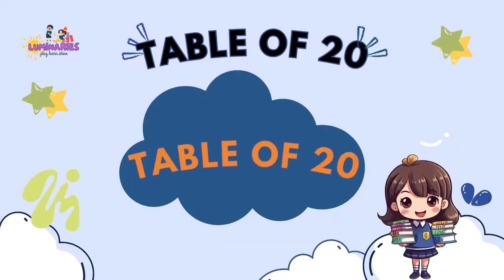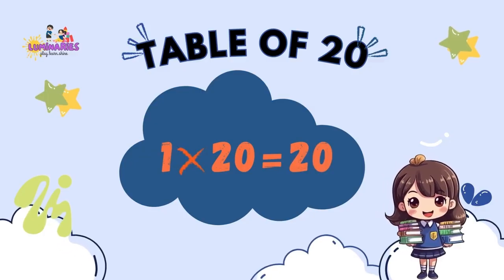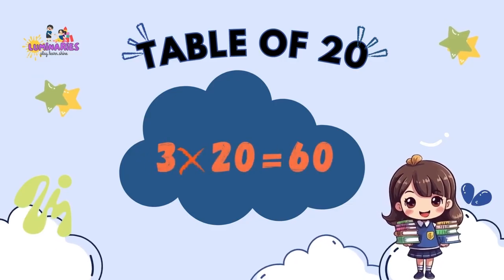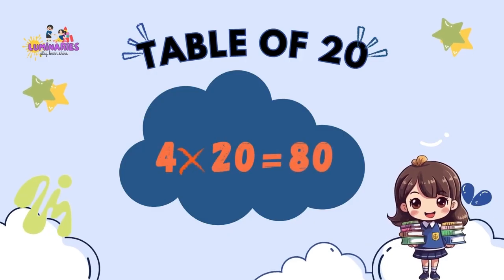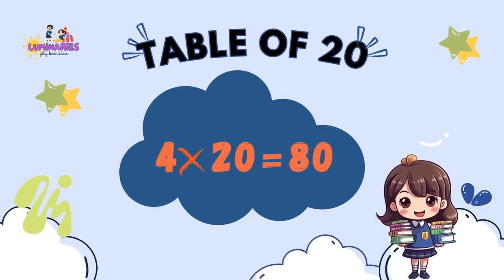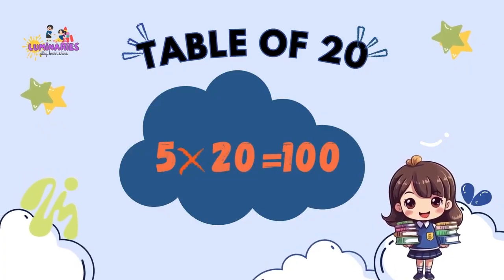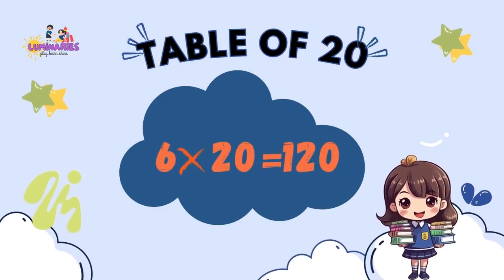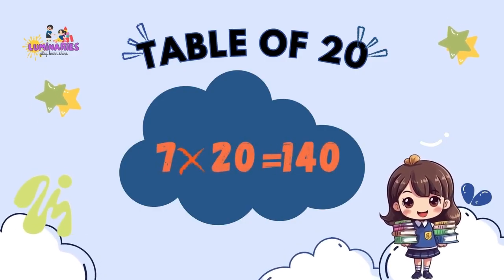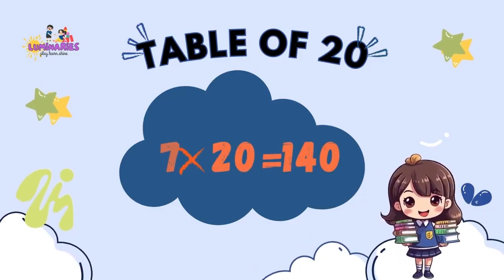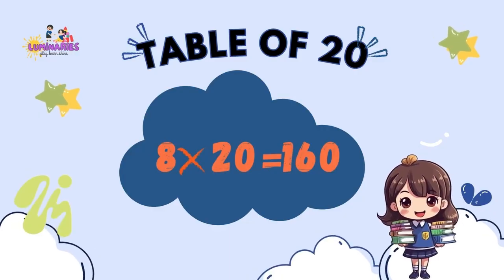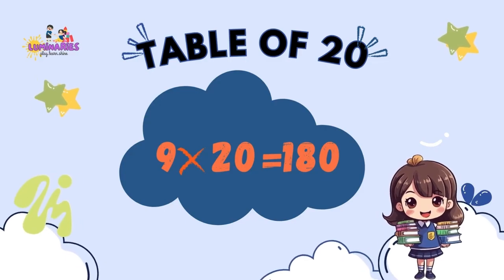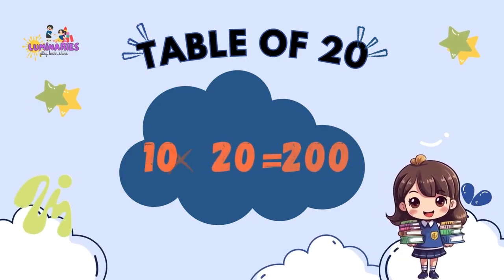Table of 20. 1 x 20 is 20. 2 x 20 is 40. 3 x 20 is 60. 4 x 20 is 80. 5 x 20 is 100. 6 x 20 is 120. 7 x 20 is 140. 8 x 20 is 160. 9 x 20 is 180. 10 x 20 is 200.